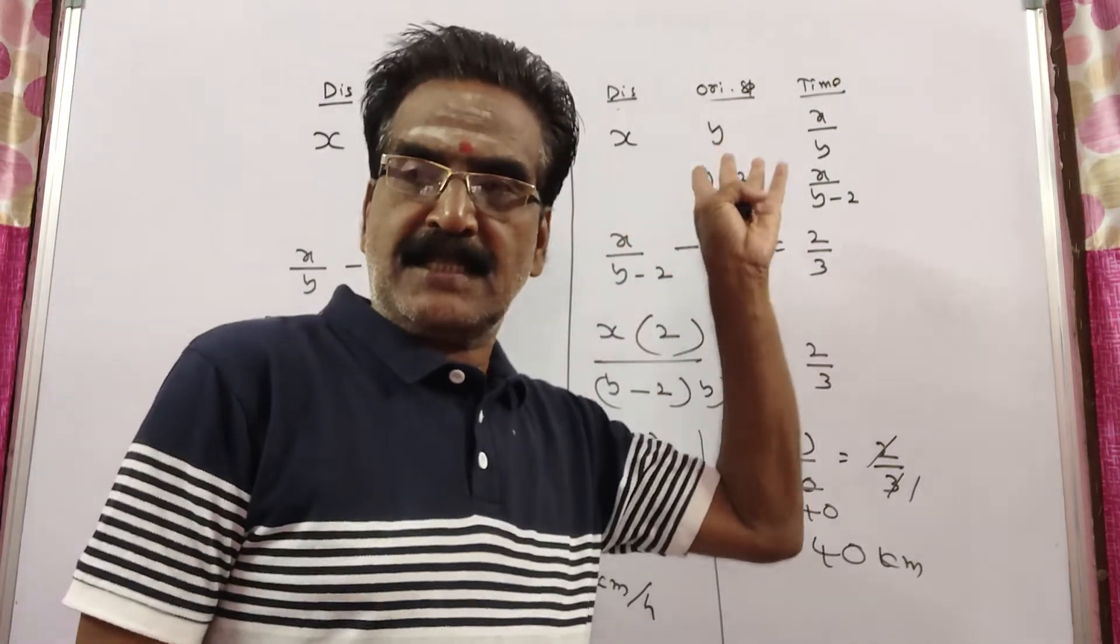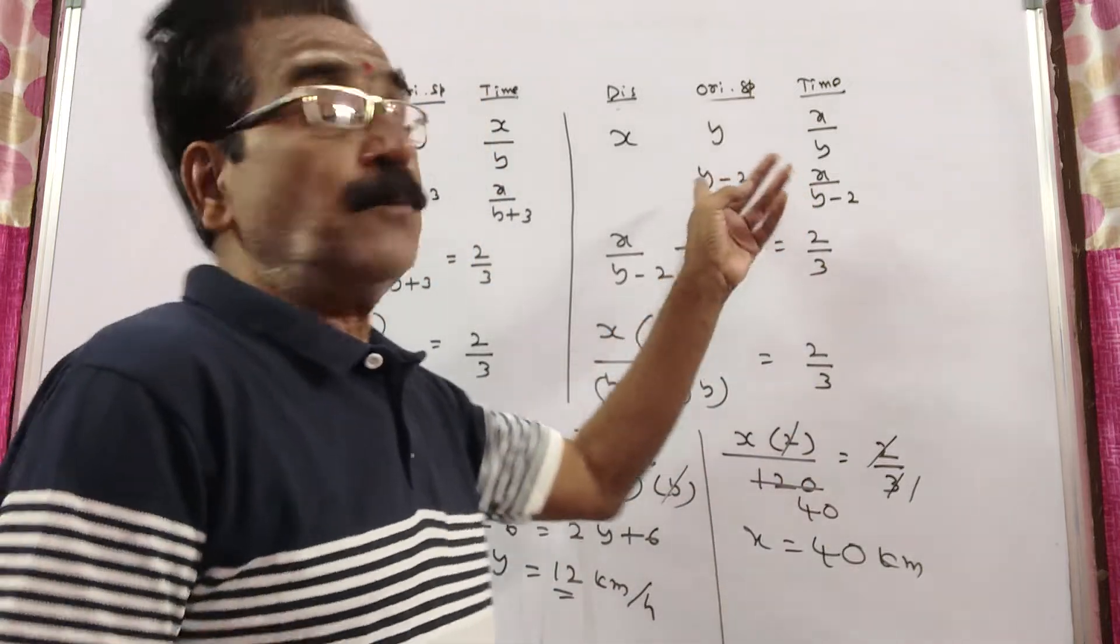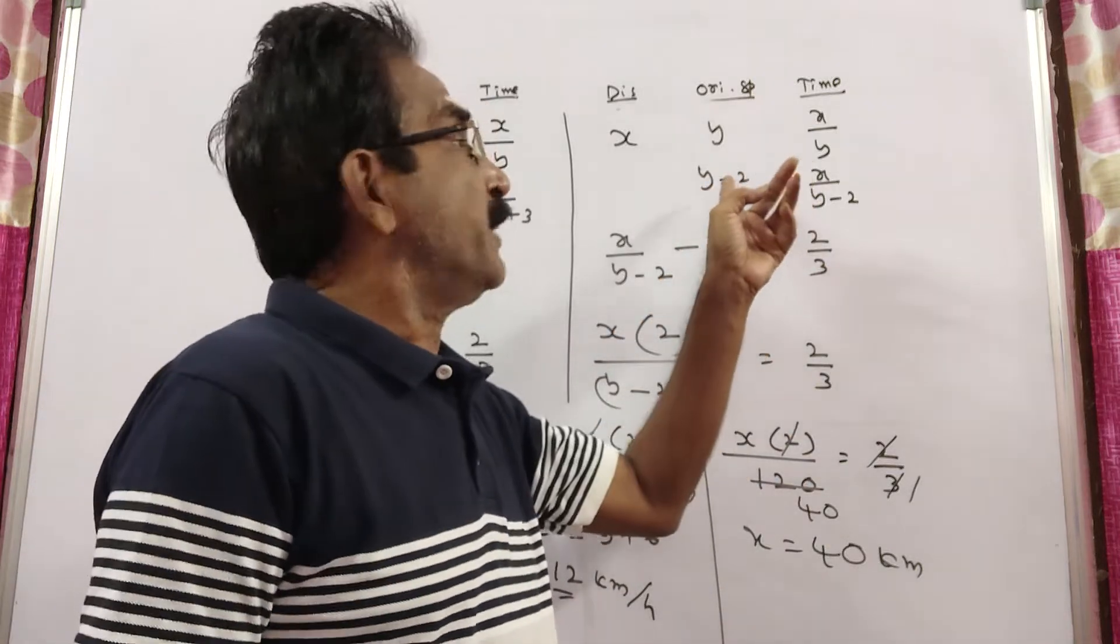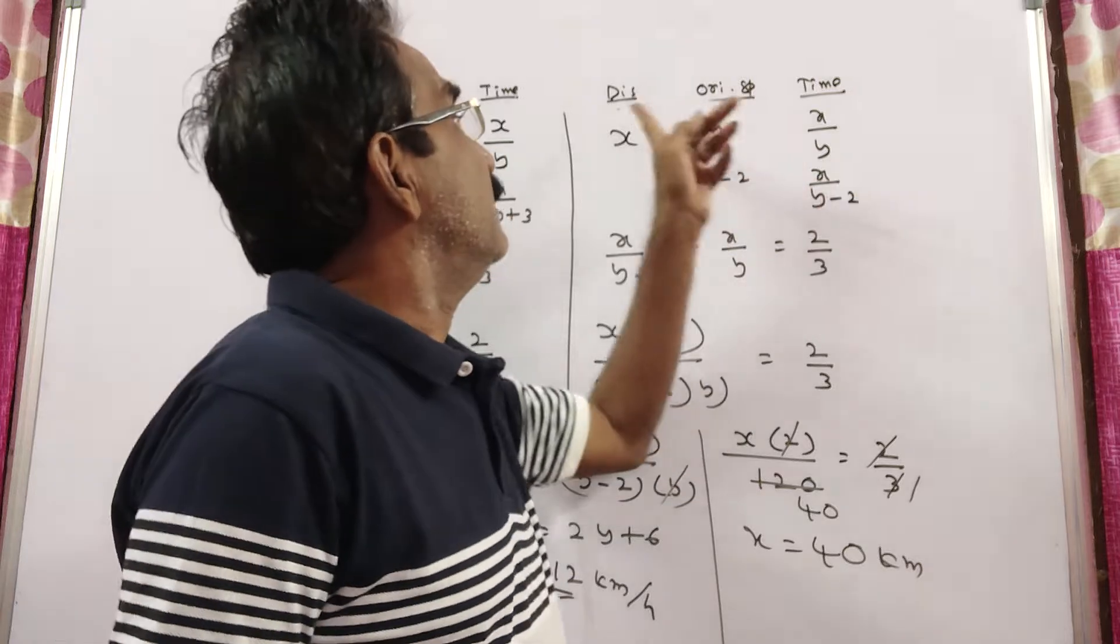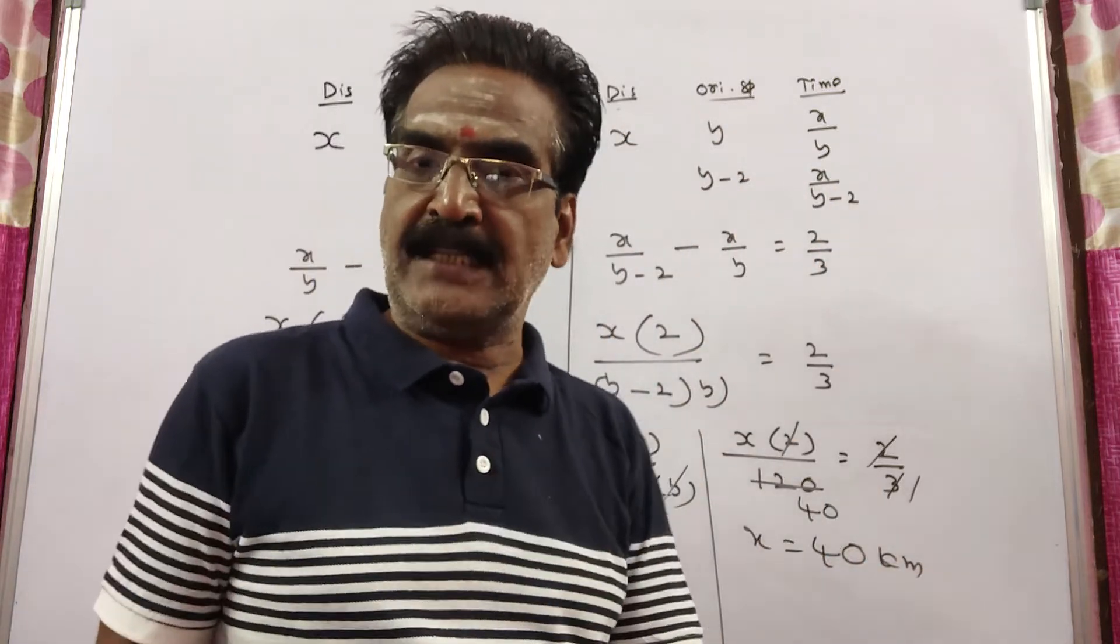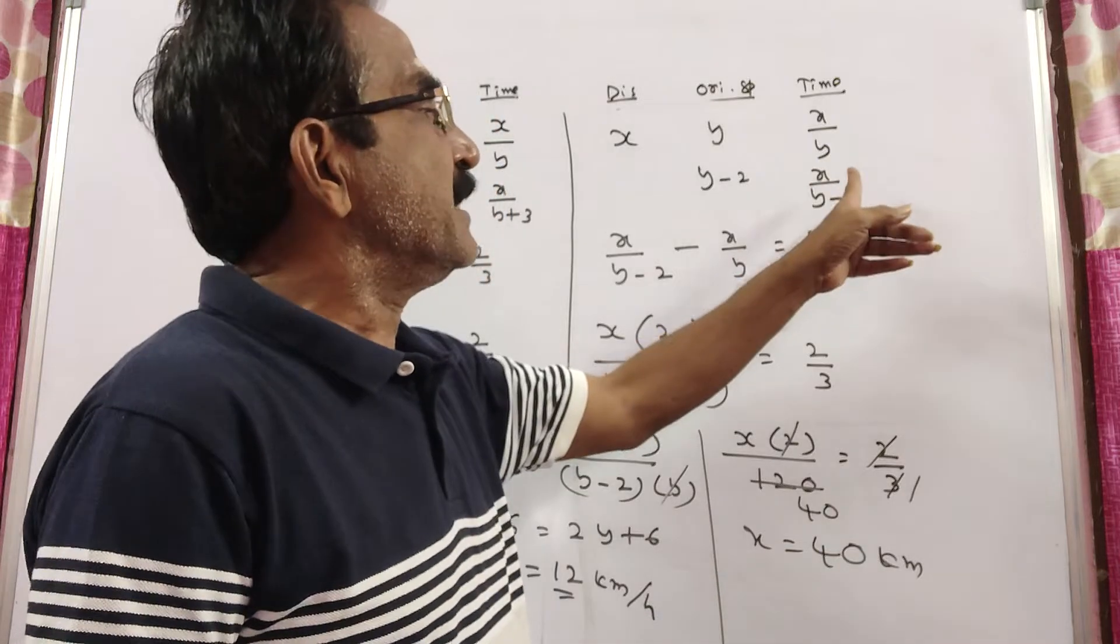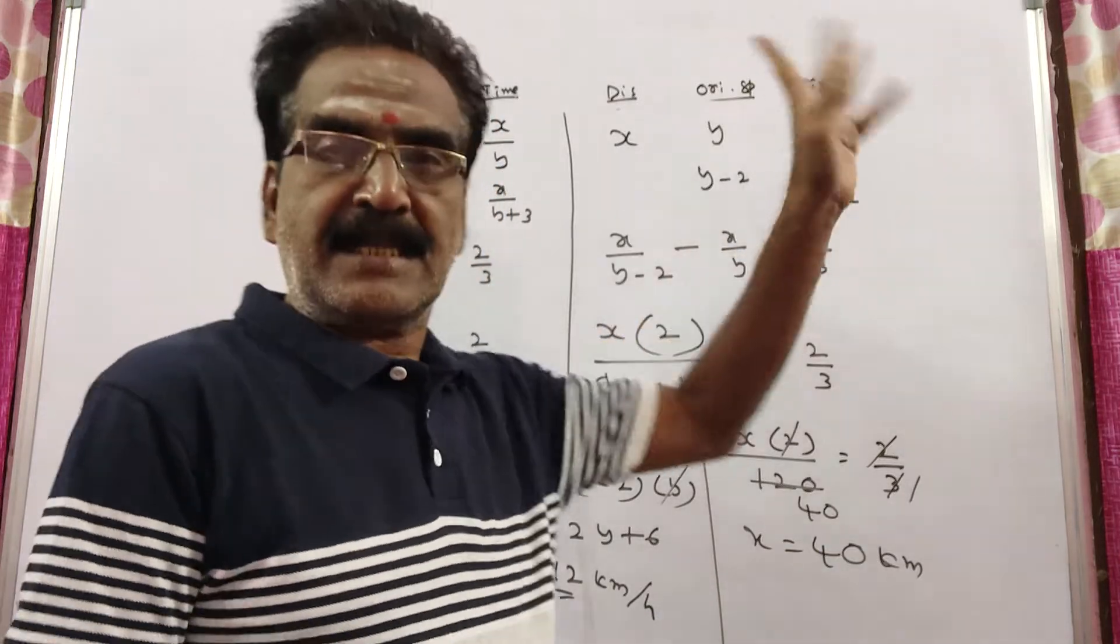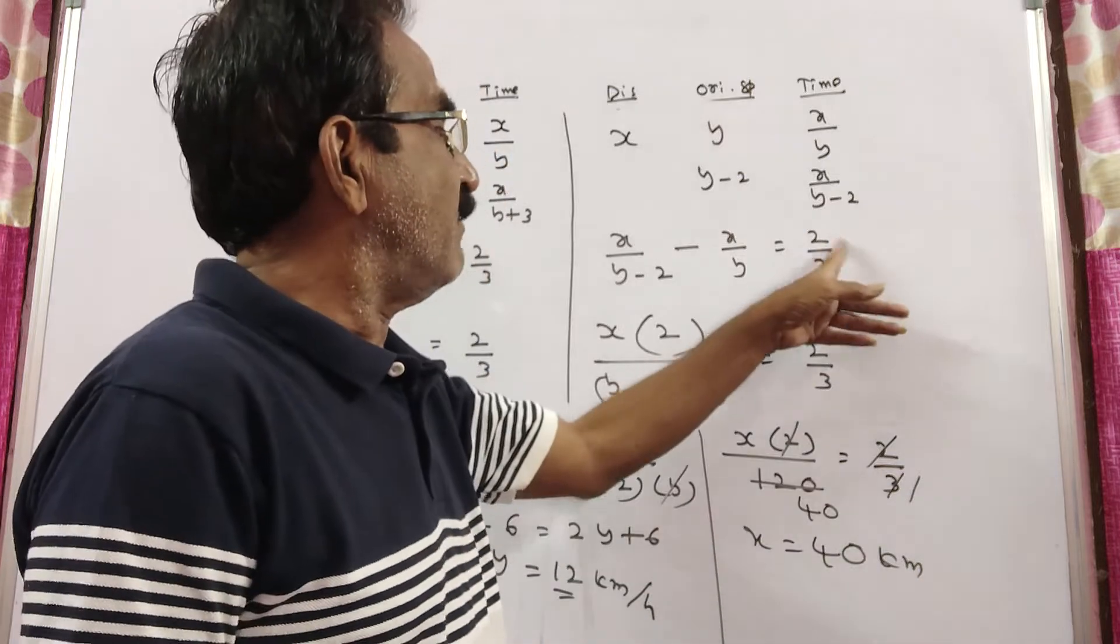Now let us come to the second statement. If it moves 2 km/h slower, then it takes x by y minus 2. It is 40 minutes more than the usual time. That means this minus this is equal to 40 minutes, which is 2 by 3 hours.